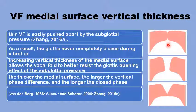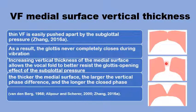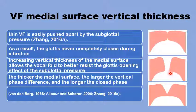As a result, the glottis may never completely close during vibration, producing a weak and breathy voice. On the other hand, increasing the vertical thickness of the medial ends of the vocal folds during phonation provides a better closure that can resist the glottis-opening effect of the subglottal pressure. Also, increasing the thickness would increase the phase difference and the pace between the inferior and the superior parts of the medial ends of the vocal folds, and this would produce a longer closed phase of the vibratory cycle.